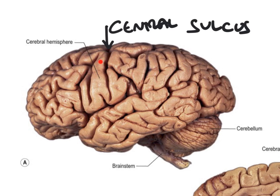The primary motor cortex, where our motor homunculus resides, can be found in the precentral gyrus anterior to the central sulcus. The primary somatosensory cortex can be found in the postcentral gyrus behind the central sulcus. So the central sulcus is a crucial landmark to orientate ourselves in the brain. It also helps to demarcate the boundary between the frontal lobe and the parietal lobe - therefore the frontal lobe contains the motor cortex, and the parietal lobe contains the sensory cortex.